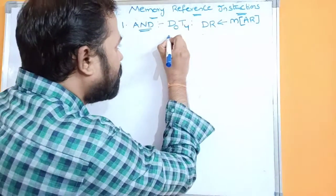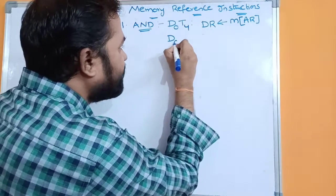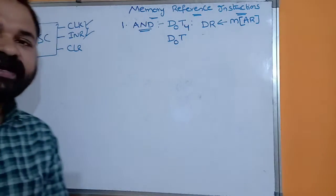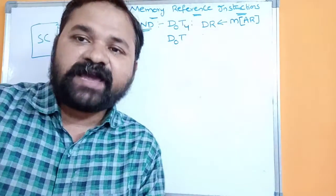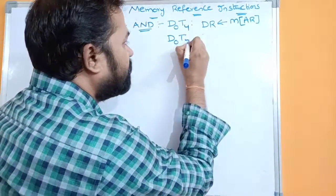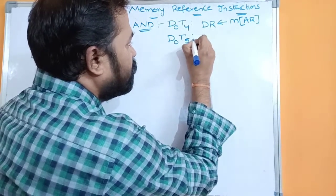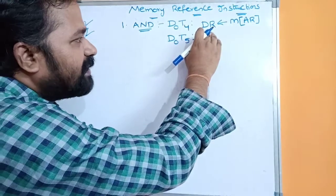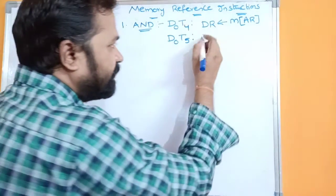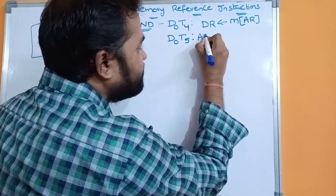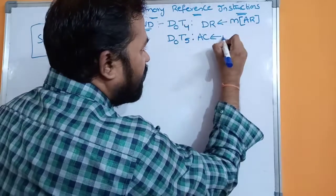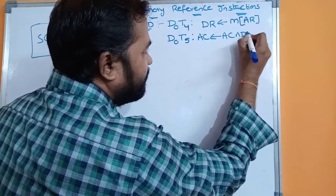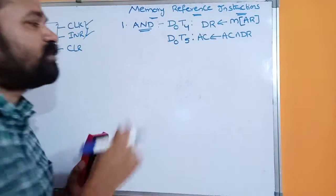In the next clock pulse the decoded output is still D0, but whenever the increment control input is enabled, the next clock pulse becomes T5. So at T5, the AND operation is performed on the data register and accumulator, and the AND result is transferred to the accumulator.